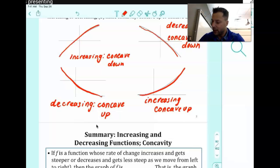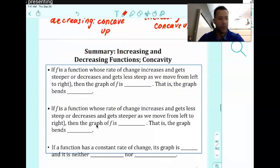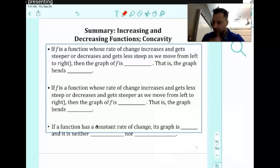The last little bit here is just the summary of concavity. If a function whose rate of change increases and gets steeper or decreases and gets less steep as we move from left to right, the graph is concave up. It bends upwards.